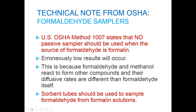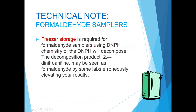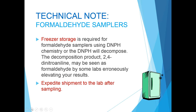OSHA states in the method that sorbent tubes with calibrated airflow should be used to sample formaldehyde from formalin solutions. Also note that freezer storage is required for formaldehyde samplers using DNPH chemistry — elevated temperatures will cause the DNPH to decompose, which may cause sampler background levels or results to be erroneously elevated. To avoid these temperature concerns, it is also recommended that you expedite shipment of the samplers to the lab after sampling.